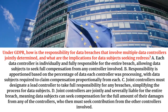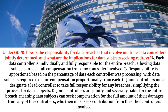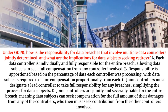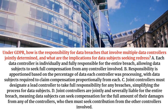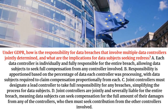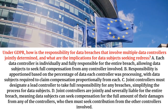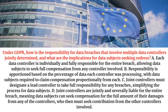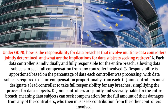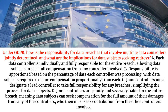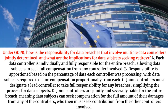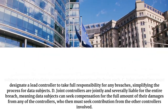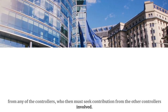B. Responsibility is apportioned based on the percentage of data each controller was processing, with data subjects required to claim compensation proportionally from each. C. Joint controllers must designate a lead controller to take full responsibility for any breaches, simplifying the process for data subjects. D. Joint controllers are jointly and severally liable for the entire breach, meaning data subjects can seek compensation for the full amount of their damages from any of the controllers, who then must seek contribution from the other controllers involved.